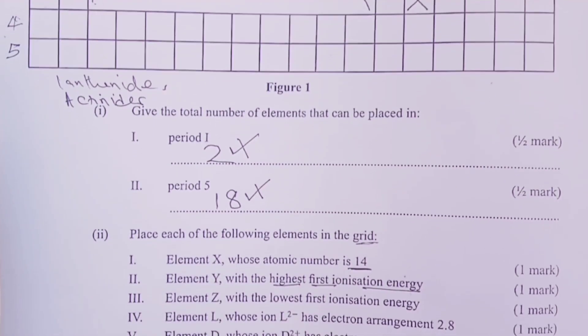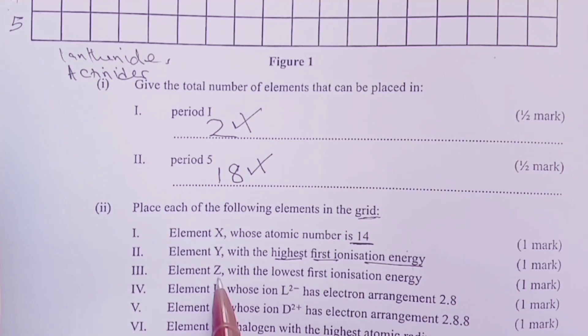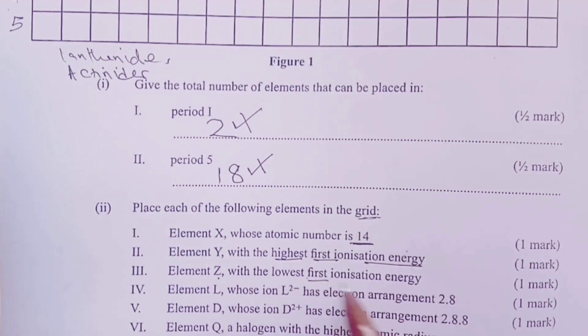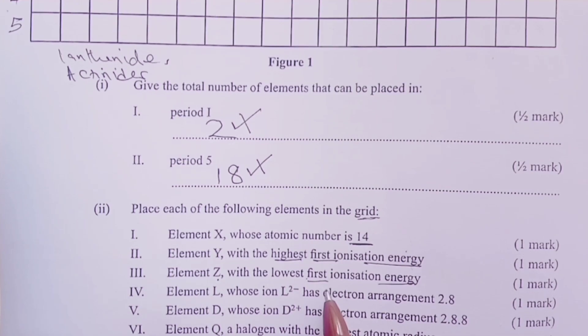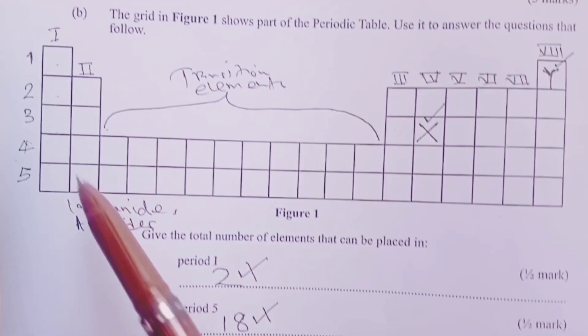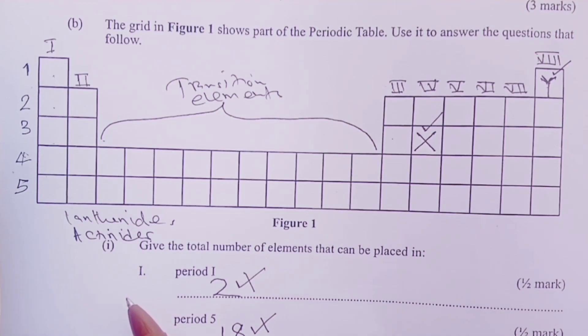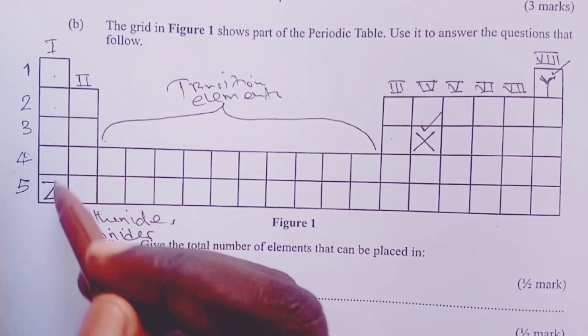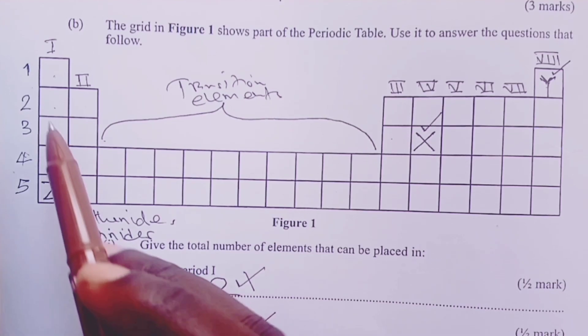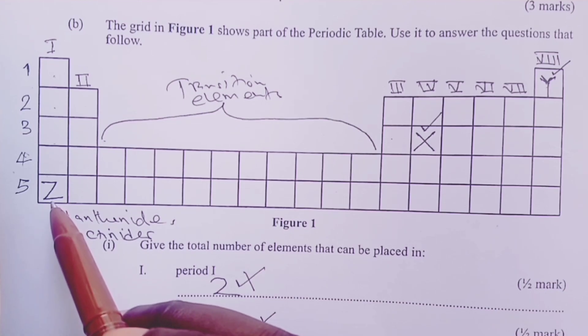Moving on, we also ask to place element Z, which has the lowest first ionization energy. This one now has to be an alkali metal. The reason is that alkali metals have the least nuclear charge, the weakest nuclear charge. So here, the one with the lowest ionization energy would have to be an alkali metal, but that with the largest atomic radius. So the position of Z would have to be where I have placed it, an alkali metal with the largest atomic radius.